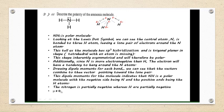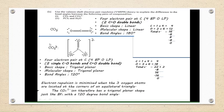So the net dipole moment, mu, is not equal to zero, which confirms that it is a polar molecule. Moving on to question 8b: use Valence Shell Electron Pair Repulsion theory to explain the difference in bond angles between the following pairs of compounds or ions. The first pair is CO2 and CO3²⁻.